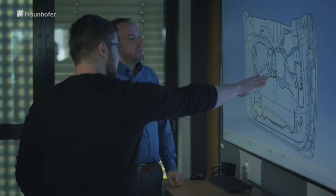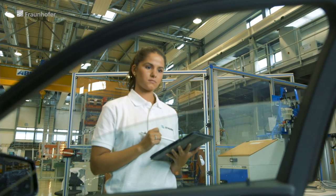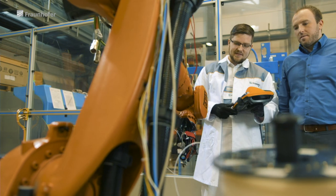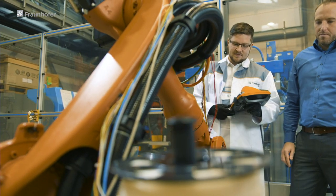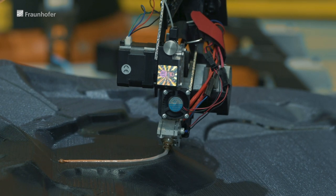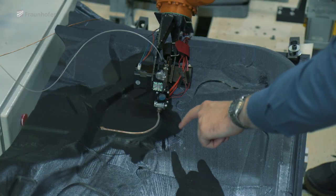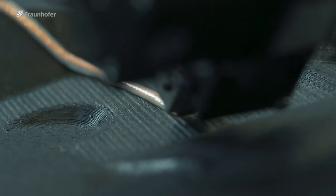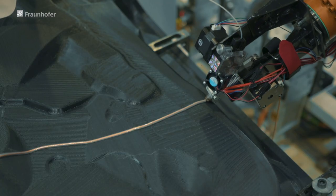When larger currents are required, for example to supply small motors for side windows or tailgates, a different technology is used. Fraunhofer IWU has developed an innovative process that uses an industrial robot system to automatically apply copper wire lines with an insulating sheath directly onto the component. The robot is programmed according to the three-dimensional shape of the car door.